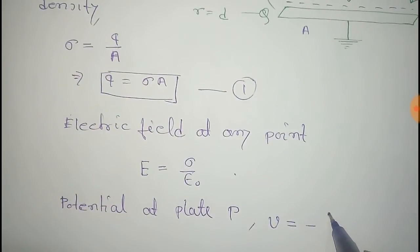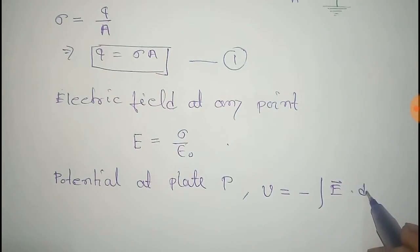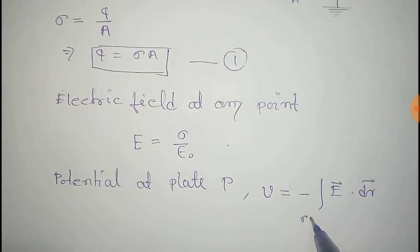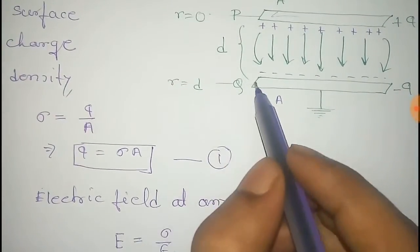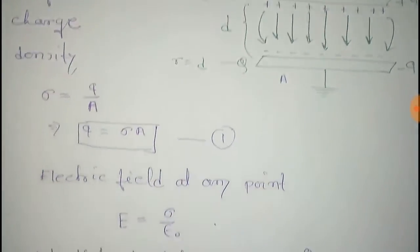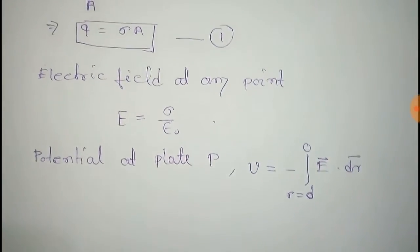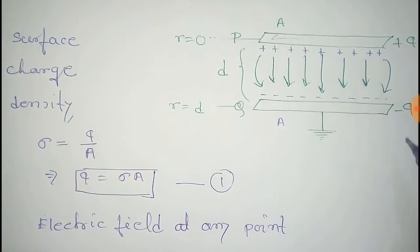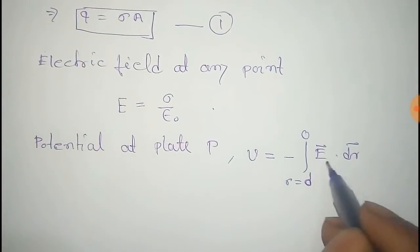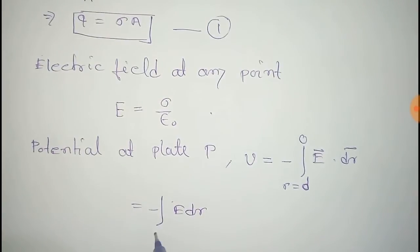that is equal to minus integral of E dot dr, E is the electric field and dr is the distance. Now the limit is from r equal to d to 0 because we take the limit from this plate to this plate. You can see the direction of electric field and the distance, that is direction of E and dr, is the same, so we can take the angle between this electric field and distance r as 0. So the dot product will be E into dr because cos 0 equal to 1.